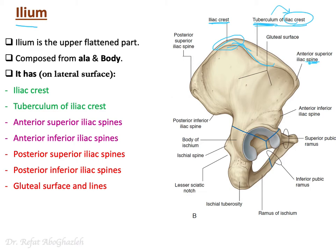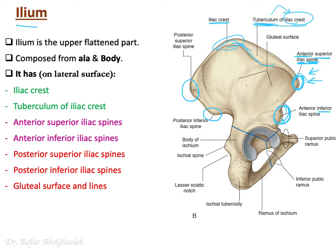The ilium also has four small protruded spines called iliac spines: two anterior and two posterior. The anterior ones are the anterior superior iliac spine and the anterior inferior iliac spine. Similarly, posteriorly you have the posterior superior iliac spine and the posterior inferior iliac spine.